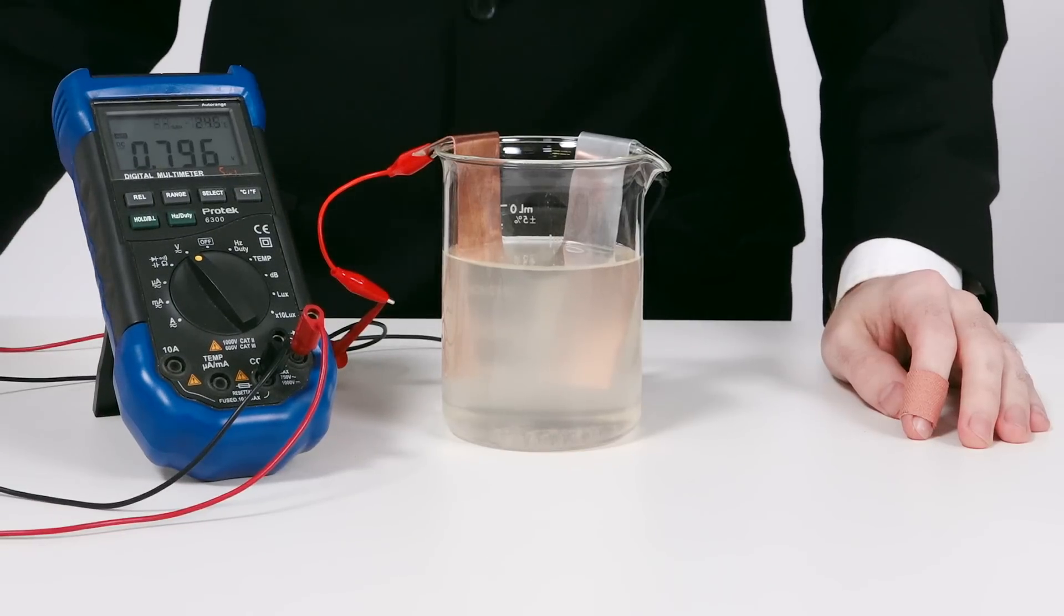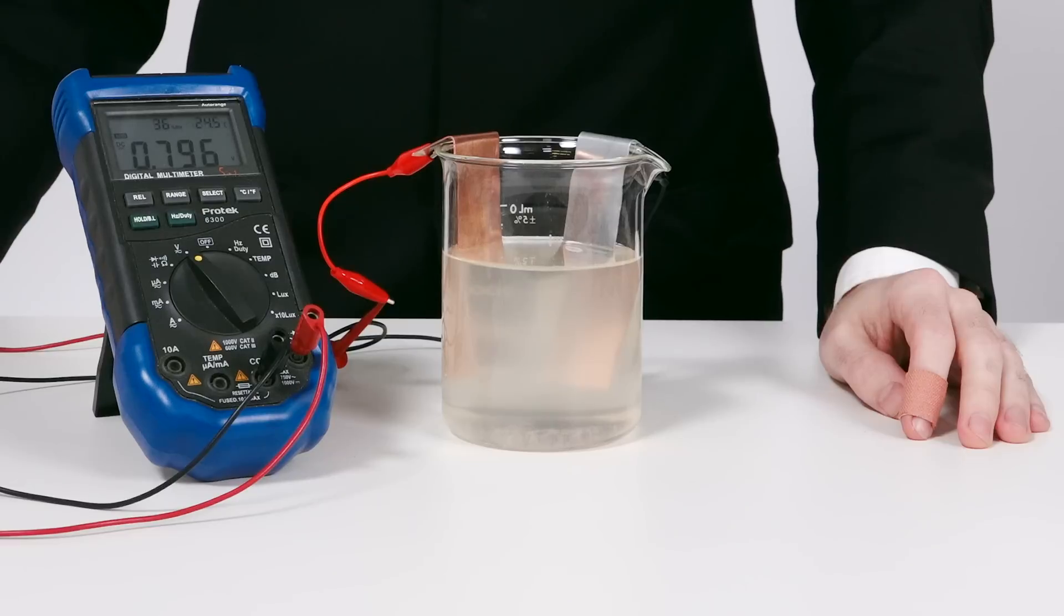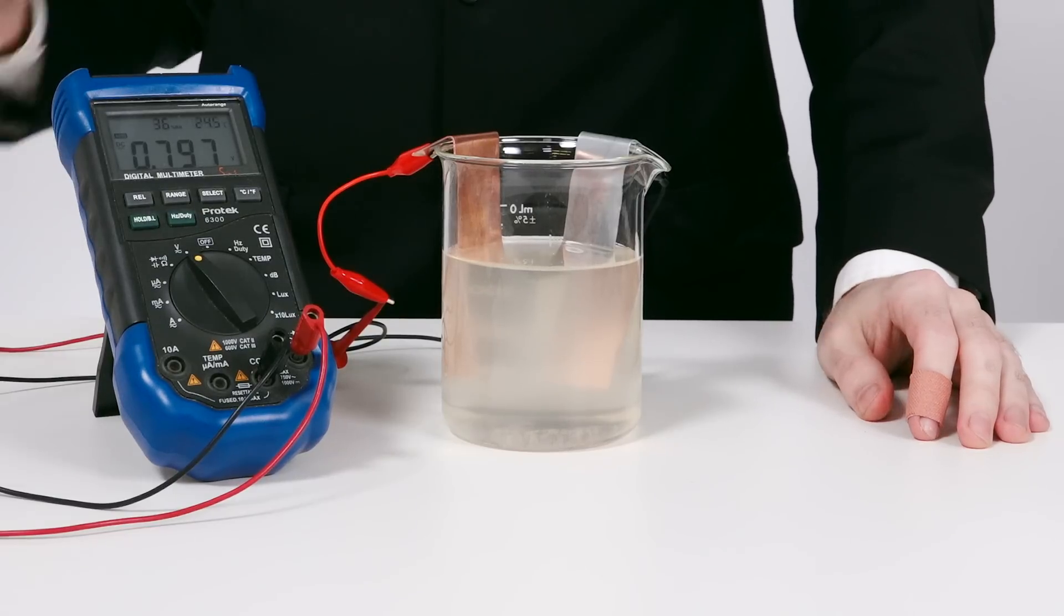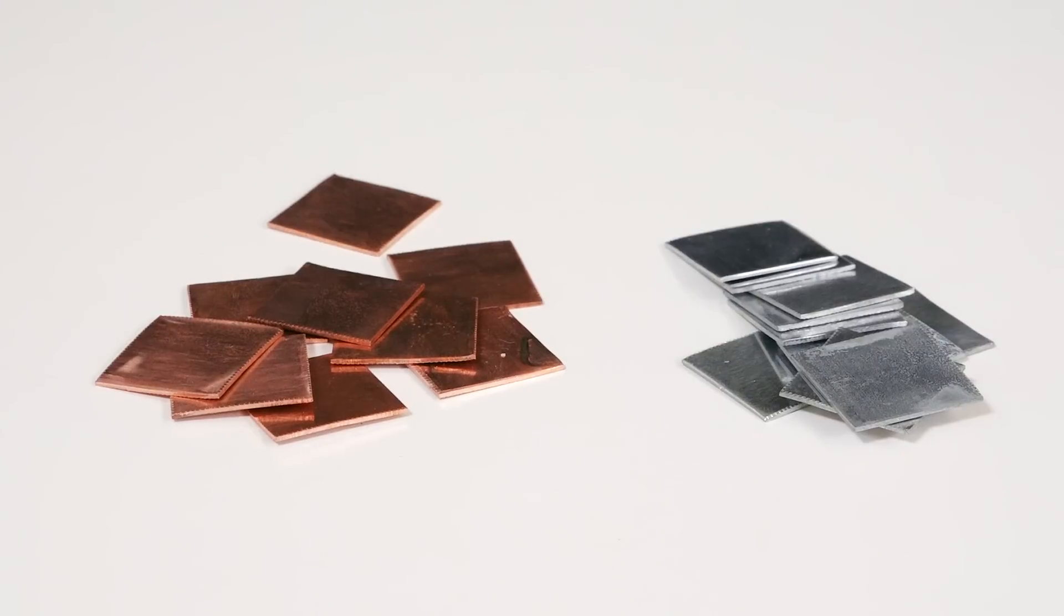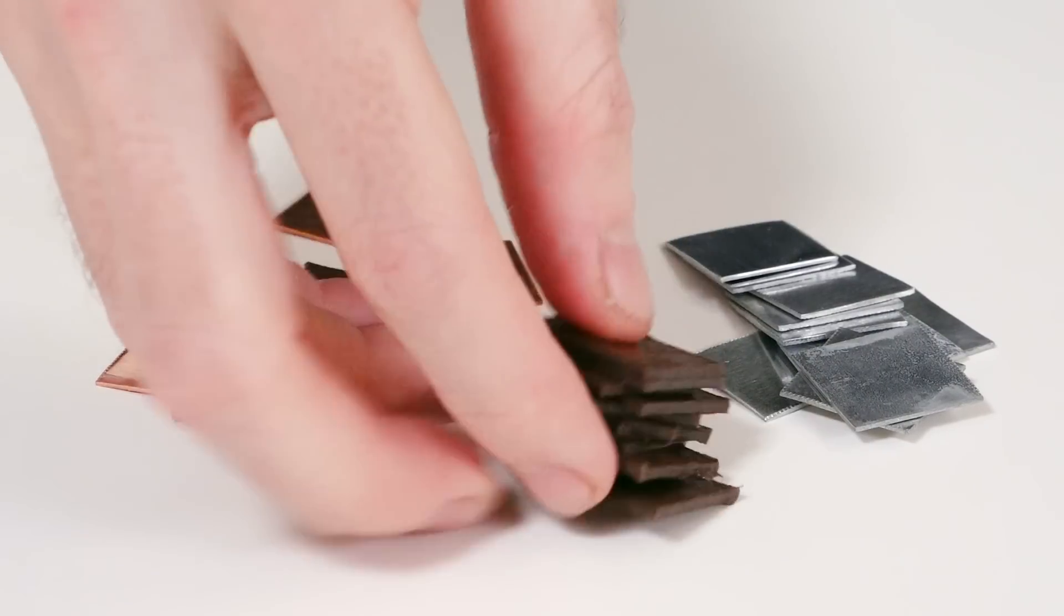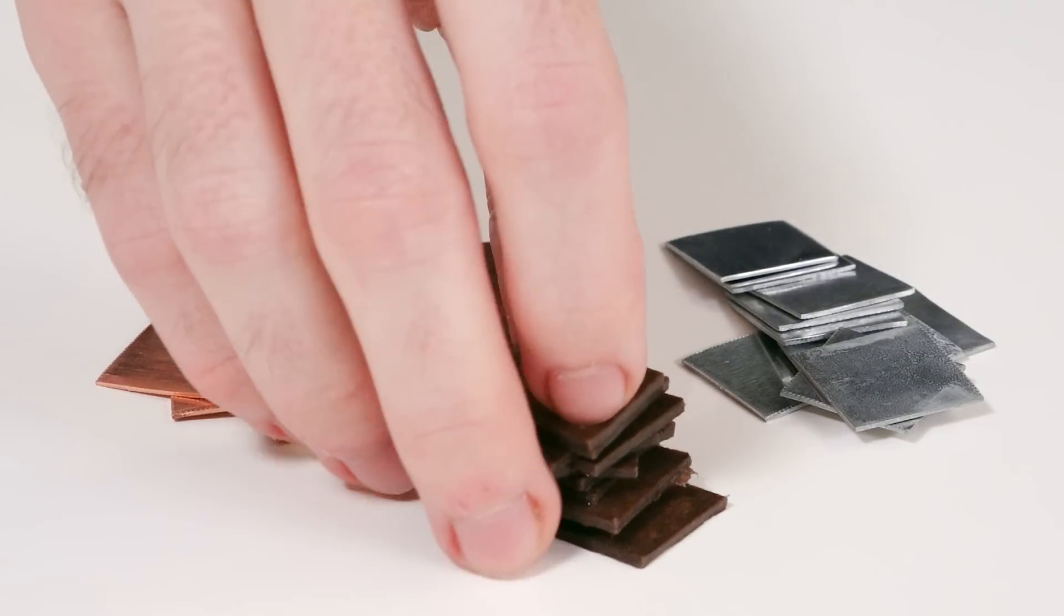The beaker cell produces 0.796 volts. Now, I'll build a bunch of cells together as a voltaic pile, using these cardboard squares, which have already been soaked in the salt water.